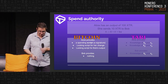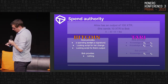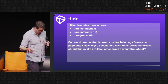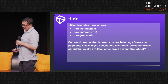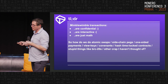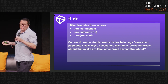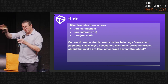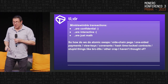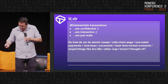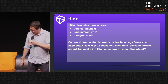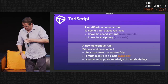To summarize: vanilla Mimblewimble transactions are confidential, but they're interactive, and it's just math — there's no scripting like Bitcoin has. With Bitcoin scripts, when you send to an address, there's a script that gets evaluated and the unlock script has to match signatures. With Mimblewimble, it's essentially just a signature. So how do you implement atomic swaps, side chain pegs, one-sided payments, view keys, covenants, hash time lock contracts, and things like BRC-20s? In vanilla Mimblewimble, you simply can't. Enter Tari Script.